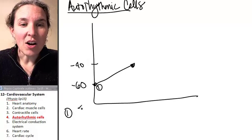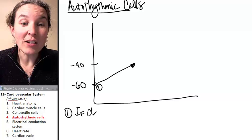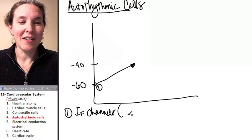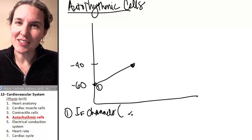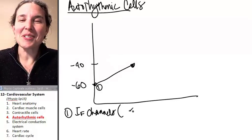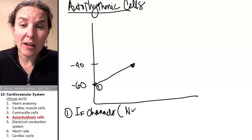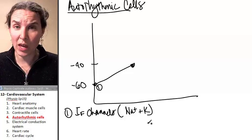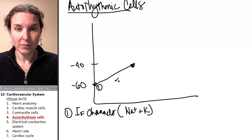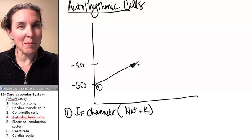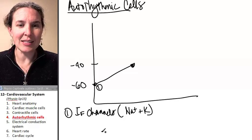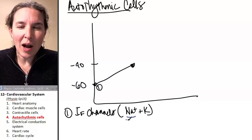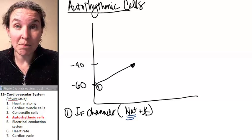Autorhythmic cells have special channels called IF channels. And the F actually comes from the word funny. These are funny channels. The researchers thought they were super funny because they're leaky. They're leaky for sodium and potassium. Who do you think they're more leaky for? Look what's happening to my membrane potential as these funny channels are doing their thing. I'm slowly depolarizing, which means that we're probably a little more leaky to sodium than to potassium.